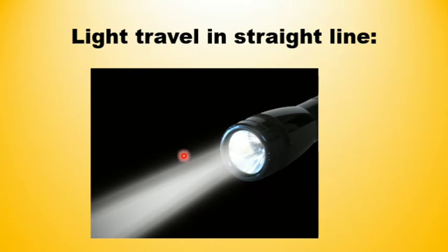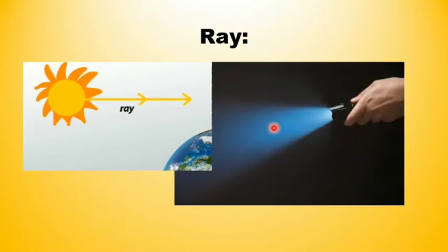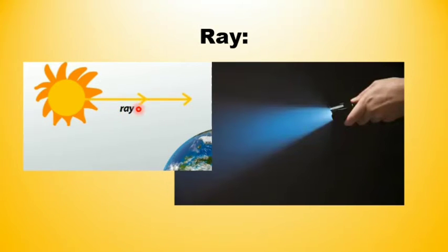Students, light always travels in a straight line. We can observe it if we see the beam of light from a torch in a dark room. A very narrow beam of light is known as a ray of light, and it is represented by a straight line with an arrow which indicates the direction in which the ray of light travels.